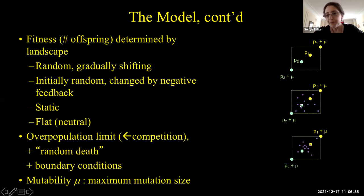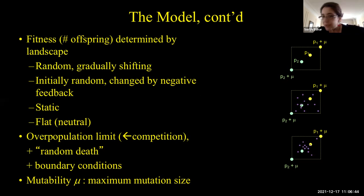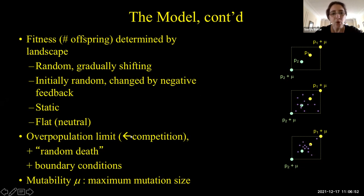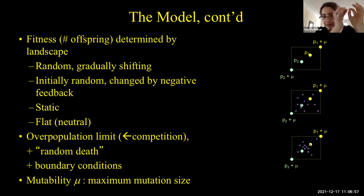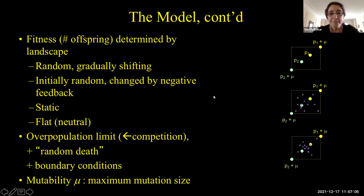After the reproduction phase, there's also a death phase, and organisms can die based on a random epidemic sweep — a certain percentage die every generation. We also have boundary conditions where they fall off the edge of the world. If two organisms are too close to each other, one of them will randomly die. So basically what I'm describing is something that can be thought of as a branching random walk in a space, and we wanted to look at how that model evolves as a function of the mutability.